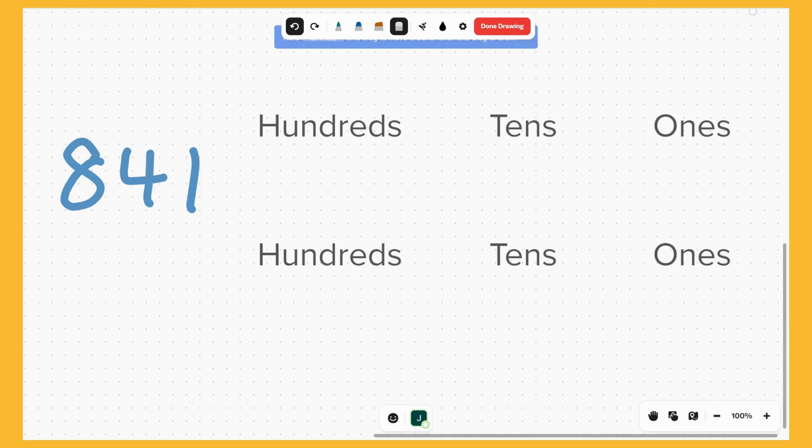Now we are going to take a look at how we can use the place value tables. So we got the number here, 841.